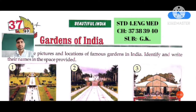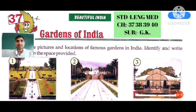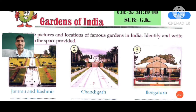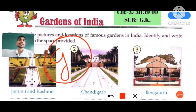Hi students, after a little pause we meet here again. In this session you will learn about gardens of India. In our India there are different types of famous gardens. The first one you can see on your screen is situated in Jammu and Kashmir. Its name is Mughal Garden Nishant Bagh. The right answer to choose from the help box is option G.